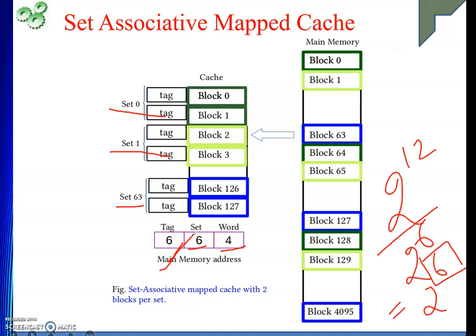Next we are going to see numericals on fully associative and set associative mapping. With the colors you can also make out that block 0 will go to set number 0. Main memory block I will occupy set number J, where J equals I mod 64. So 0 mod 64 is 0, 1 mod 64 is 1, and block 1 will occupy set number 1. These numbers are the cache memory blocks, and the color indicates into which set the main memory block will be mapped. The beauty of this method is that it gets the advantage of direct map as well as associative mapping — searching time is not very high, and rather than one specific position, inside a set we can occupy any position. So this is all about set associative mapped cache. Thank you.